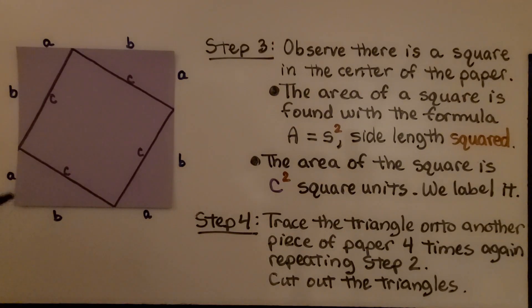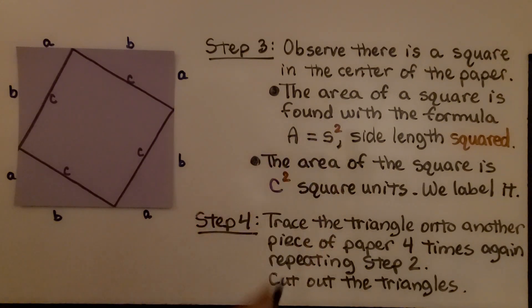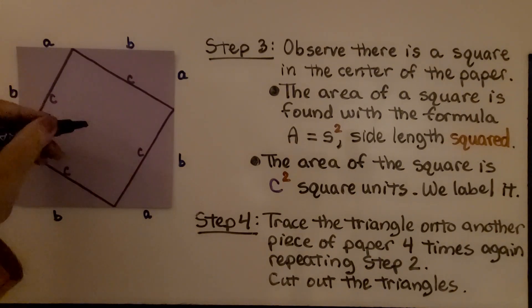Now observe, there is this square in the center of our paper. The area of a square is found with the formula A for area is equal to side squared. That's the side length squared, so it's side times side. The area of the square here is c square units. We have c times c. That's c squared. We label it c squared.